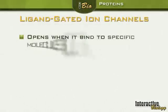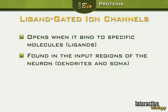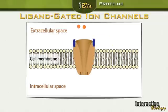Last but not least, let's talk about the ligand-gated ion channels. These are channels that open when they bind to specific molecules called ligands. They are found in the input regions of the neurons — the dendrites and the soma. Here we can see a channel in the membrane that is closed; in order to open it, ligands must come and bind to the channel, which causes it to open so the ions can come in.